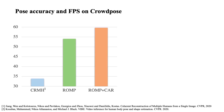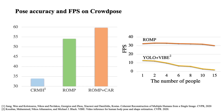On CrowdPose, the left chart shows the 2D pose accuracy of CRMH and ROMP. ROMP significantly outperforms CRMH in crowded scenes, and adding the proposed CAR approach further improves the accuracy. The right chart shows the FPS variations of ROMP and VIBE when processing images with different numbers of people. ROMP steadily maintains real-time inference speed over 30 FPS regardless of the number of people, while the FPS of VIBE rapidly decreases.